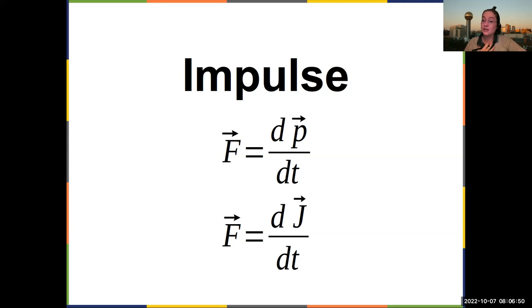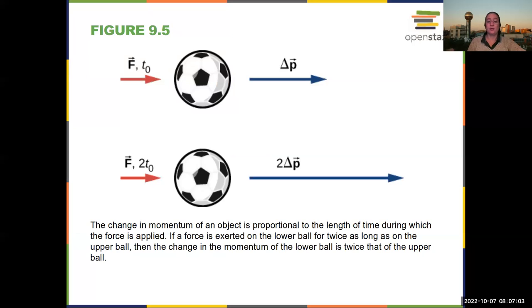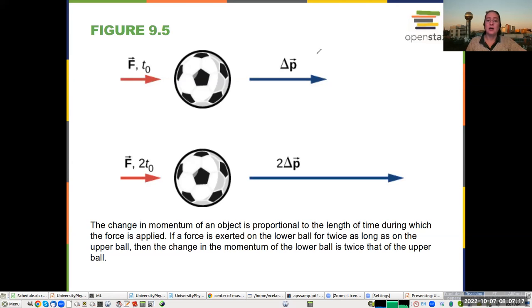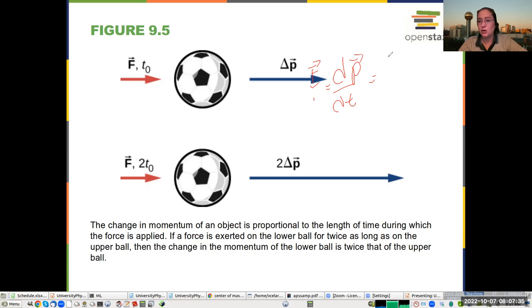We're going to define a new concept: impulse. Force is the time derivative of momentum. If we have a constant force or a small period of time, force equals the change in momentum over the change in time. We can write that force times time equals the change in momentum. So if you have a constant force and apply it twice as long, you get twice the change in momentum.